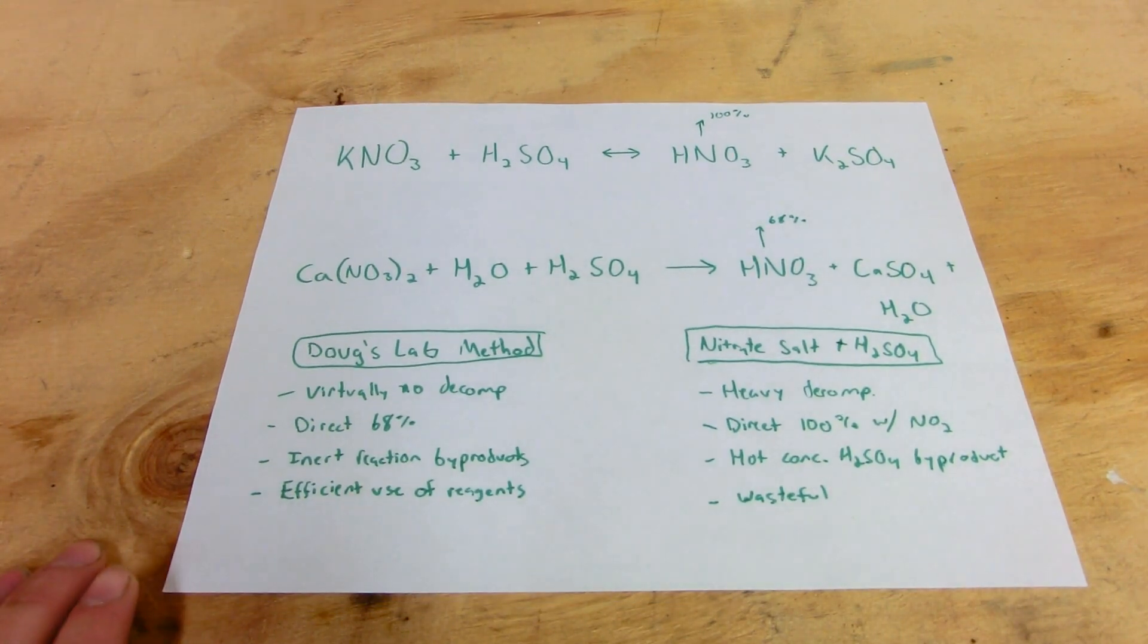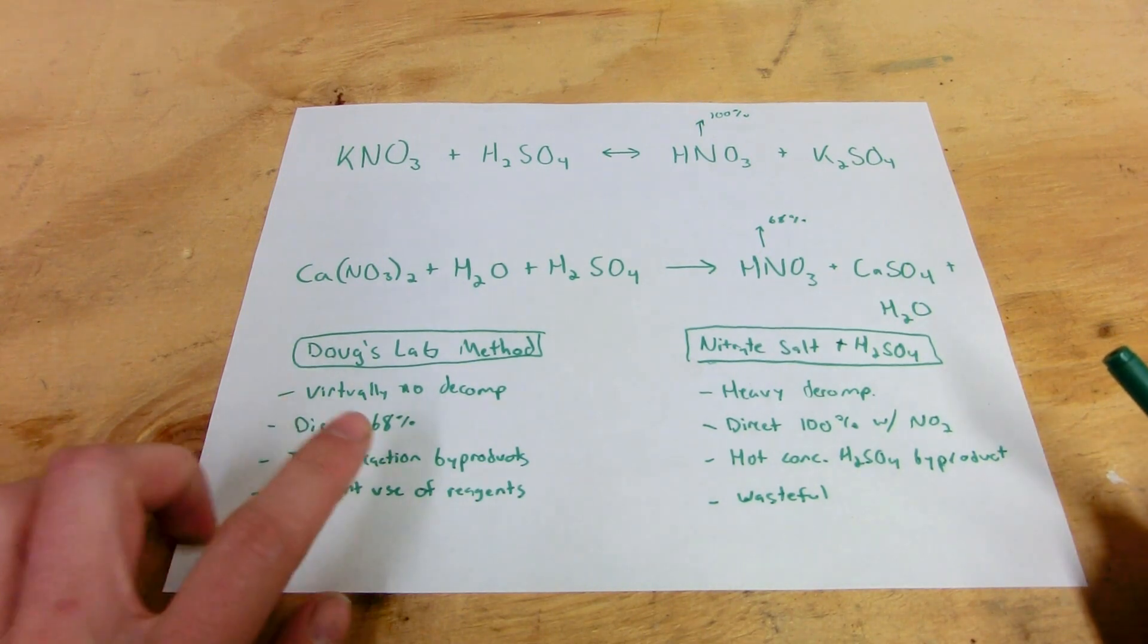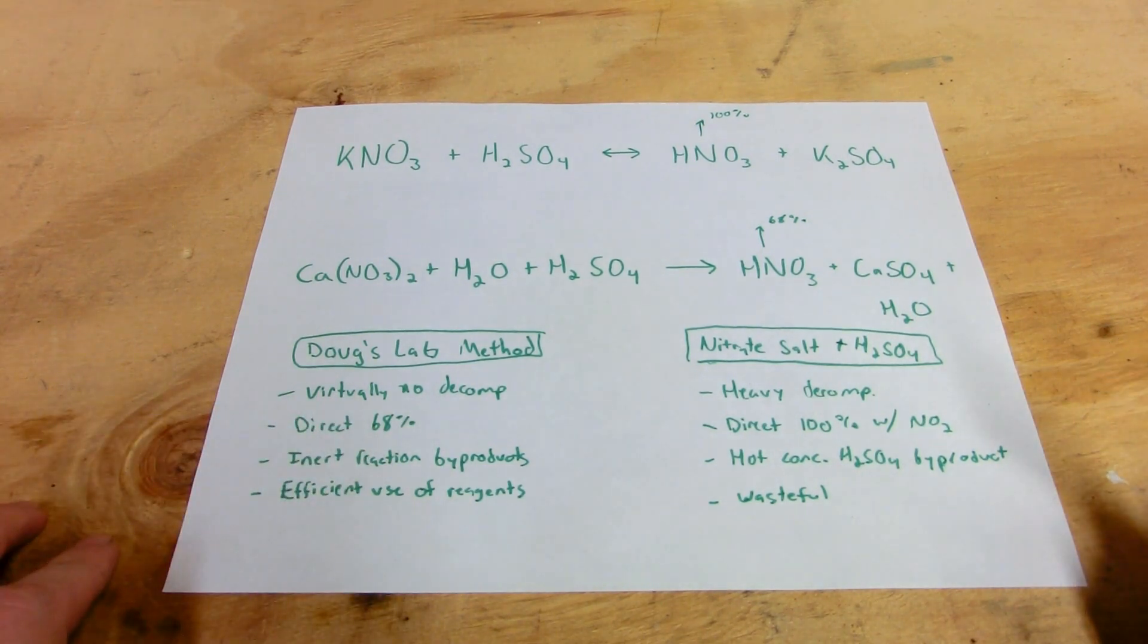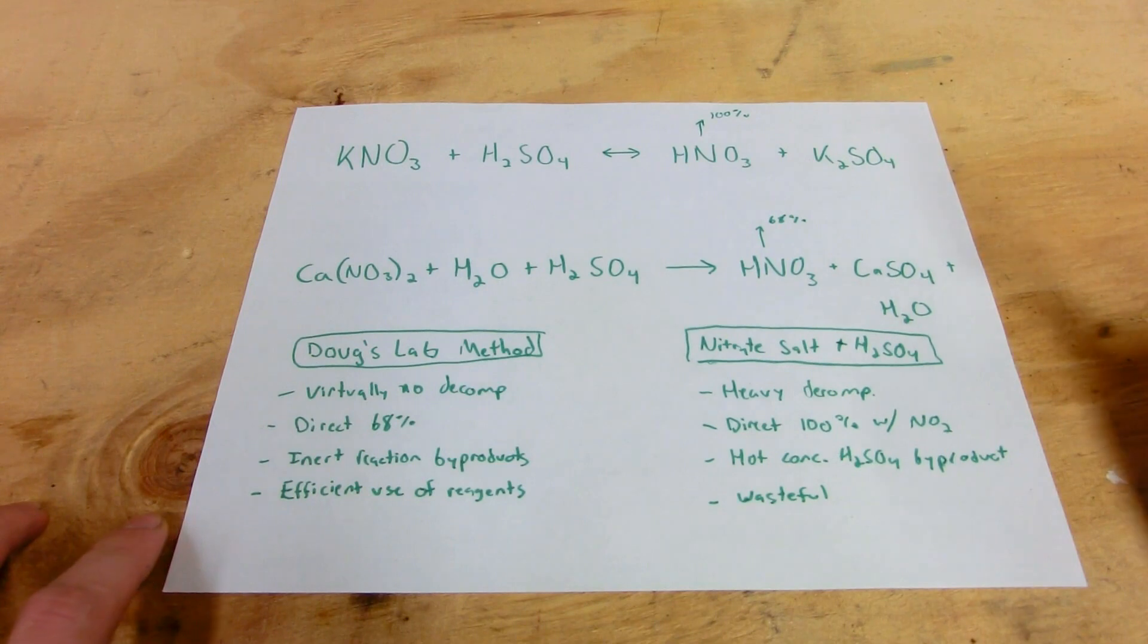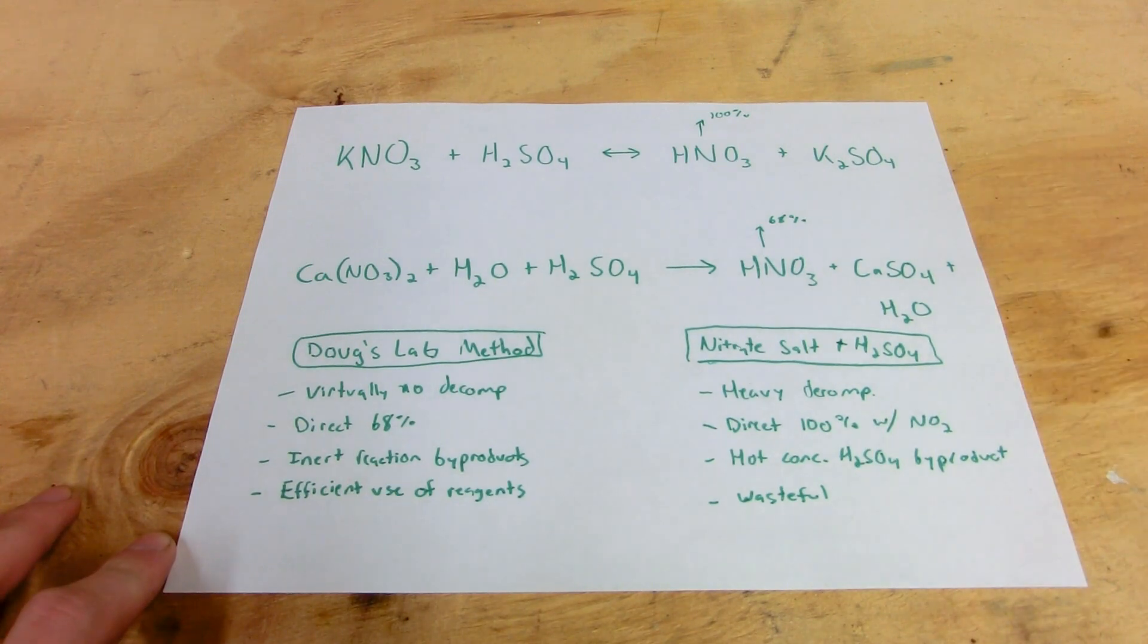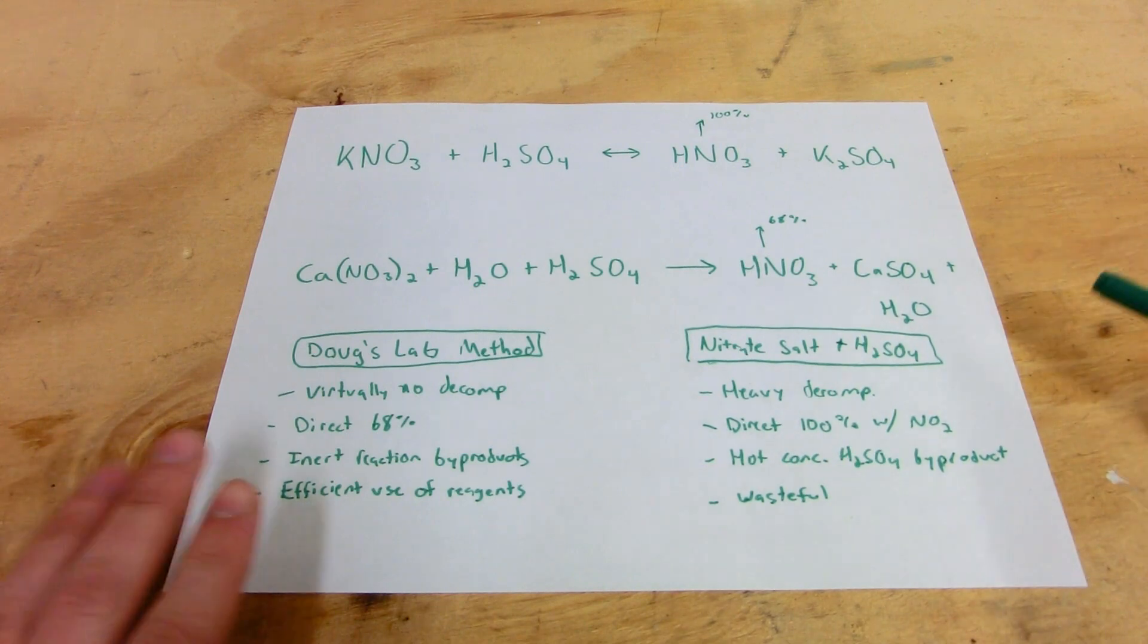Now my method is different than most other methods you'll find online because my method directly synthesizes 68% azeotropic nitric acid as opposed to other methods which synthesize 100% nitric acid. These methods are problematic because they tend to decompose the nitric acid and they use excess sulfuric acid, which is expensive and for some people hard to come by. I've devised a method where sulfuric acid is the limiting reagent and thus all of it is used. It's a lot more efficient.